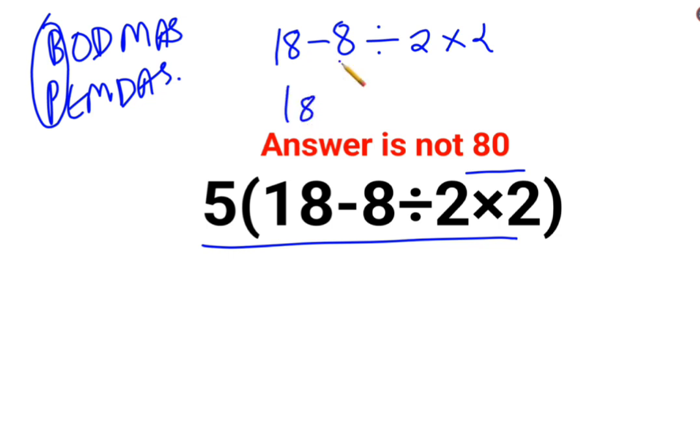Now a lot of people think that this is 18 minus 8 divided by 2 into 2 is 4. So minus 8 divided by 4 is just 2. So you got this as 16 and you need to multiply it with 5. So answer should be 80. This is actually incorrect.